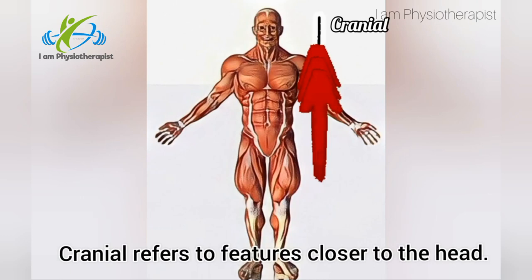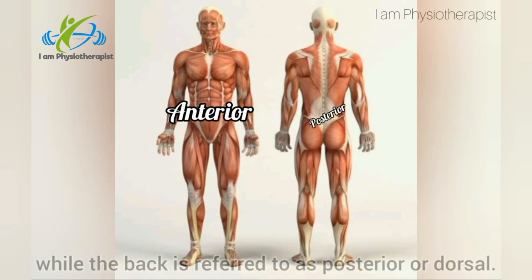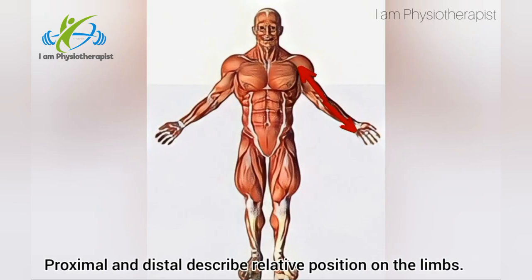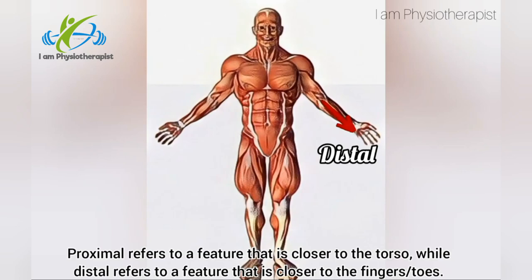In the anatomical position, many terms are used to describe relative location. Cranial refers to features closer to the head, while caudal refers to features closer to the feet. The front of the body is referred to as anterior or ventral, while the back is posterior or dorsal. Proximal refers to a feature closer to the torso, while distal refers to a feature closer to the fingers or toes.